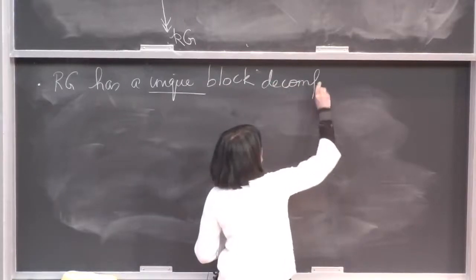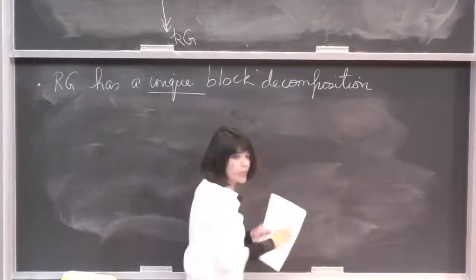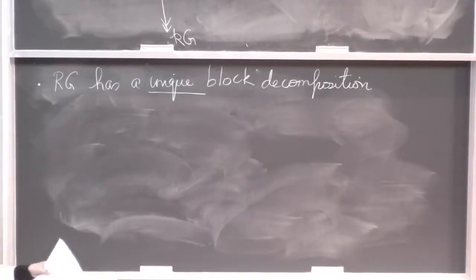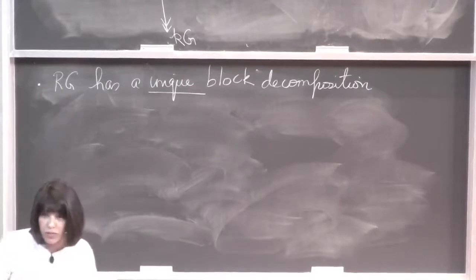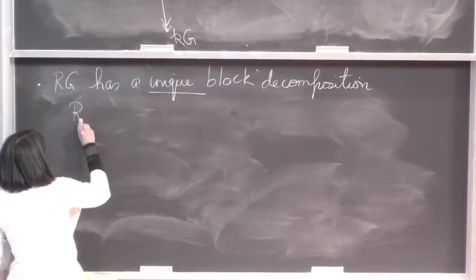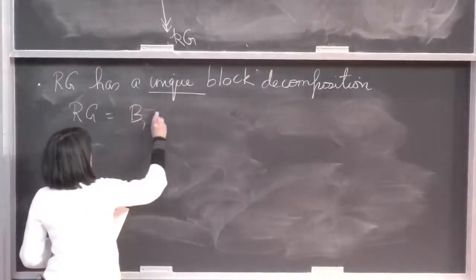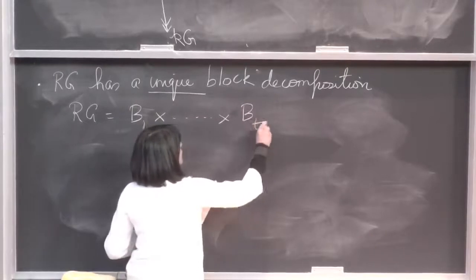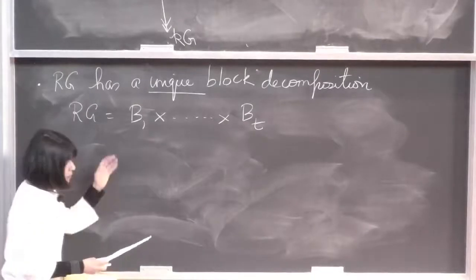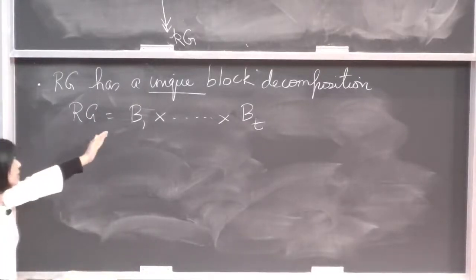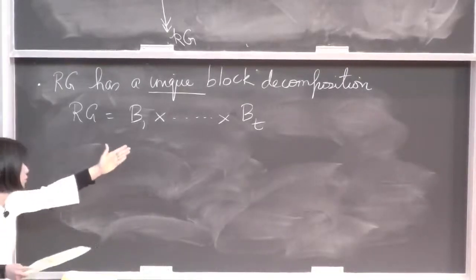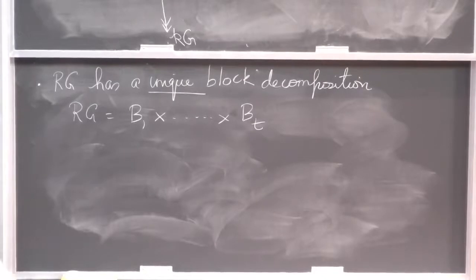Some standard facts, using the fact that R is a Noetherian ring and G is a finite group: RG has a unique decomposition into blocks. This is different from decomposing a module into indecomposable summands, because that is not a unique phenomenon, but block decomposition is truly unique. Every group algebra can be uniquely written as a product of its blocks.